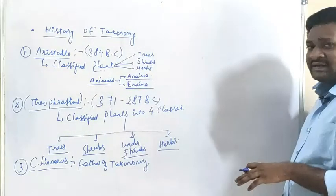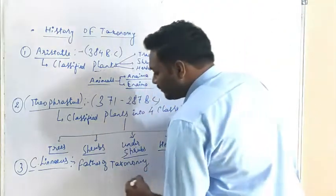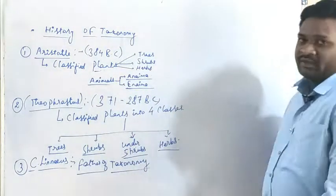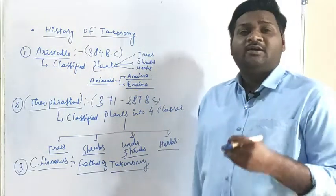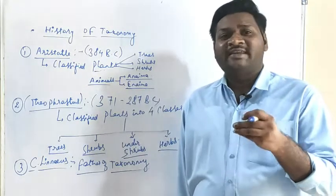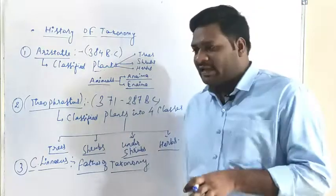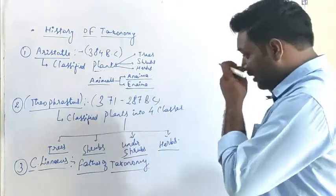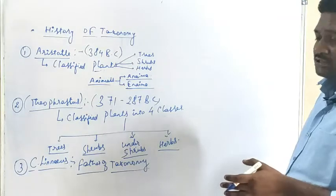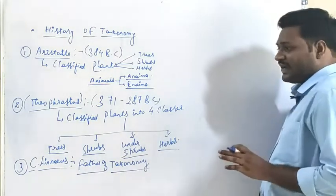Another scientific contribution was given by Carolus Linnaeus, who is also referred to as the father of Taxonomy. He proposed the two kingdom classification system, classifying organisms into two different kingdoms: kingdom Plantae and kingdom Animalia. Apart from this, we have some more classification systems which were given by different scientists.